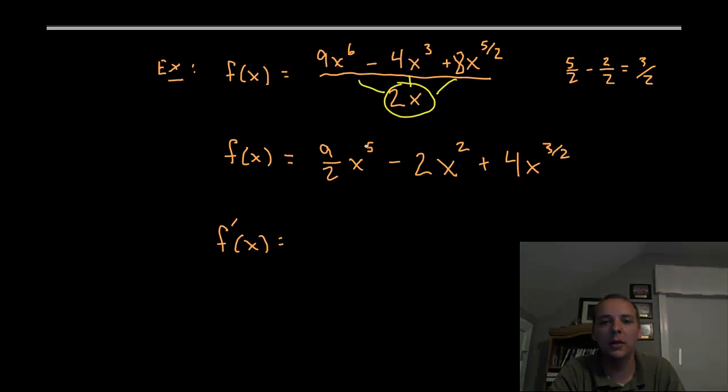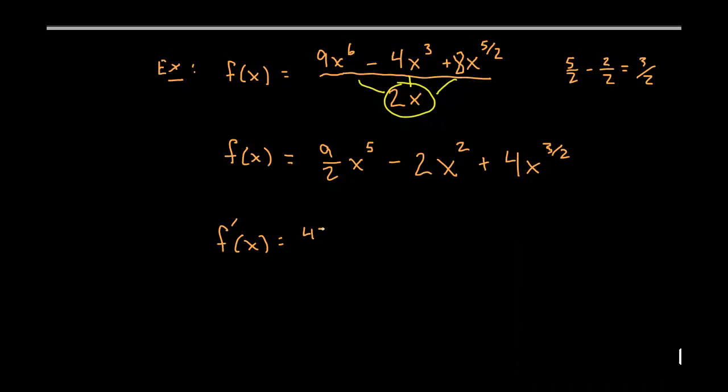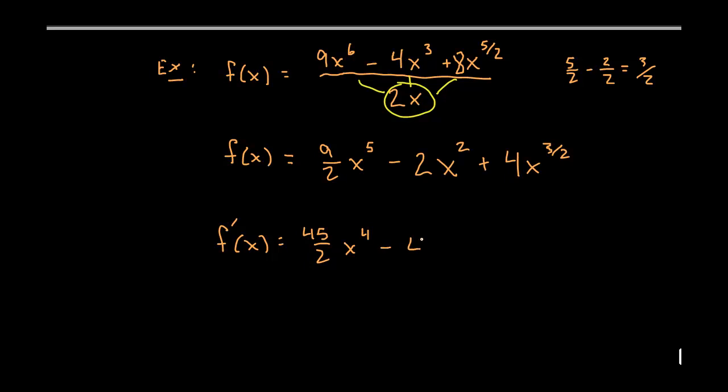So f prime of x would be let's see bring that five down you get forty five halves x to the fourth, that's five times nine, minus four x plus four times three halves x to the three halves minus one would be one half. Now the coefficient four times three halves so the four and the two cancel and so you get two times three which would be six x to the one half. So you can either leave that as x to the one half or we could write that as the square root of x, you know either way.